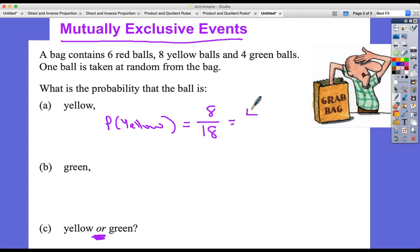We can simplify that to four-ninths. Excellent. Next one, probability of green. Let's do this together. So there's four green balls out of a total of 18 balls, and again we can just half those numbers because they're both even, two-ninths.